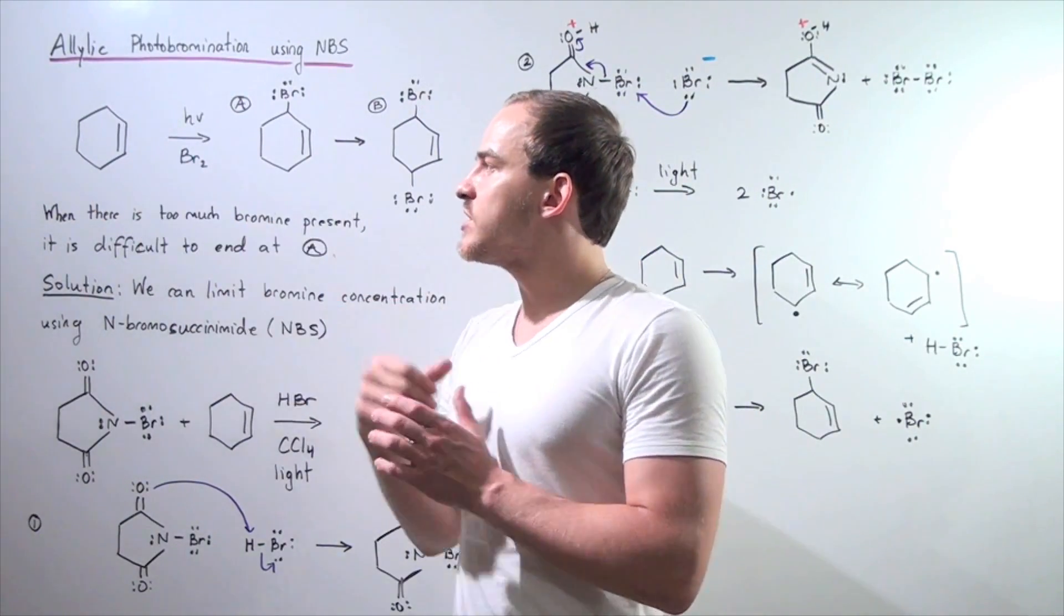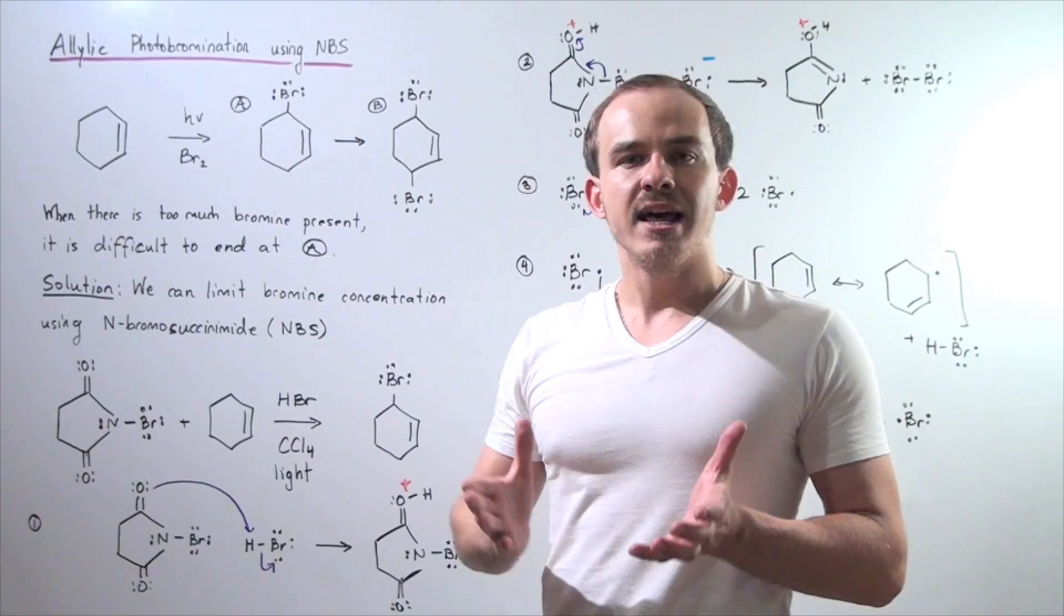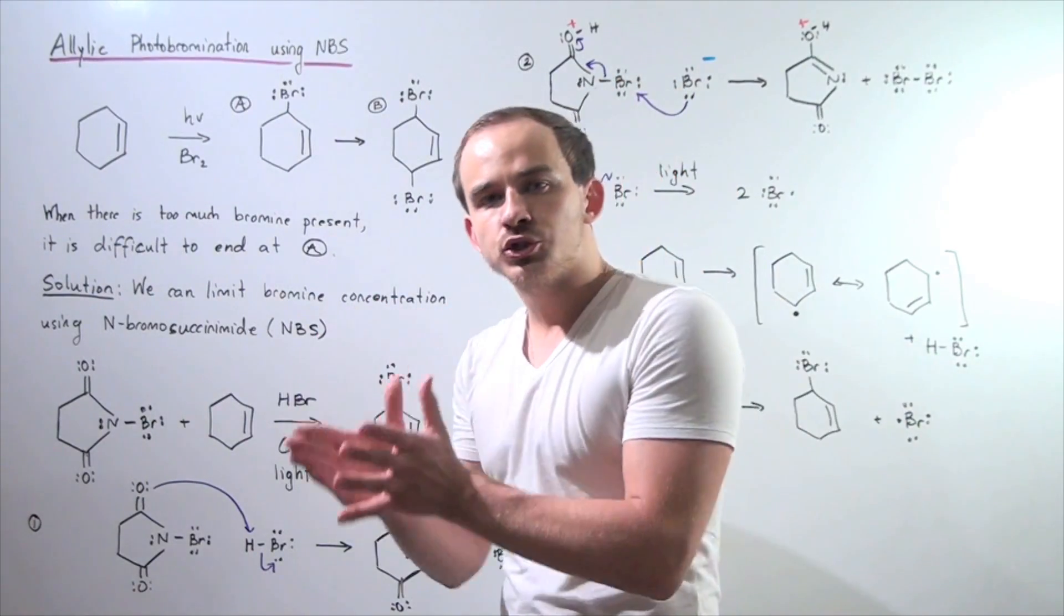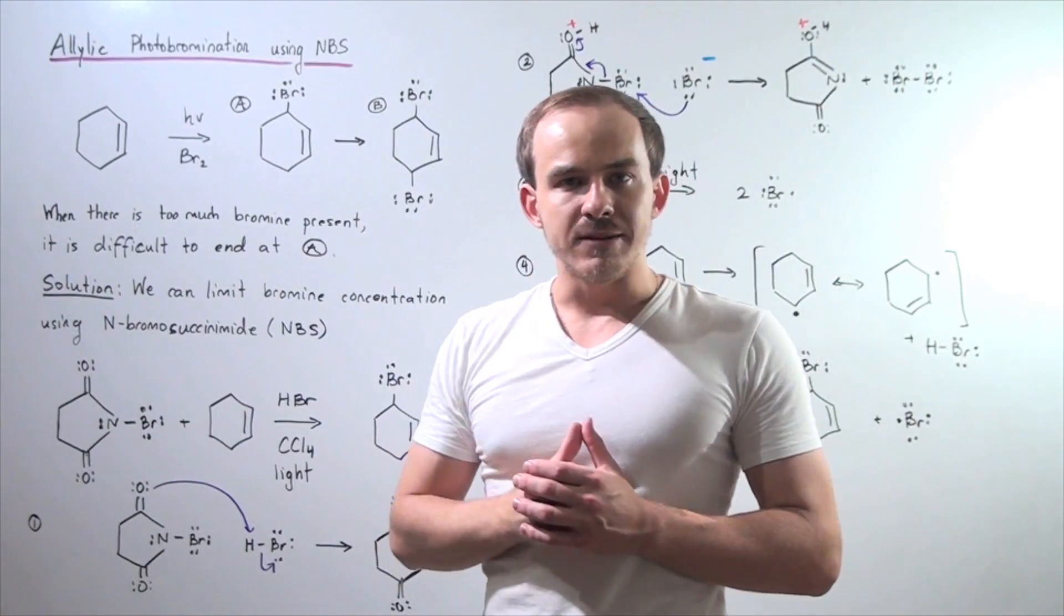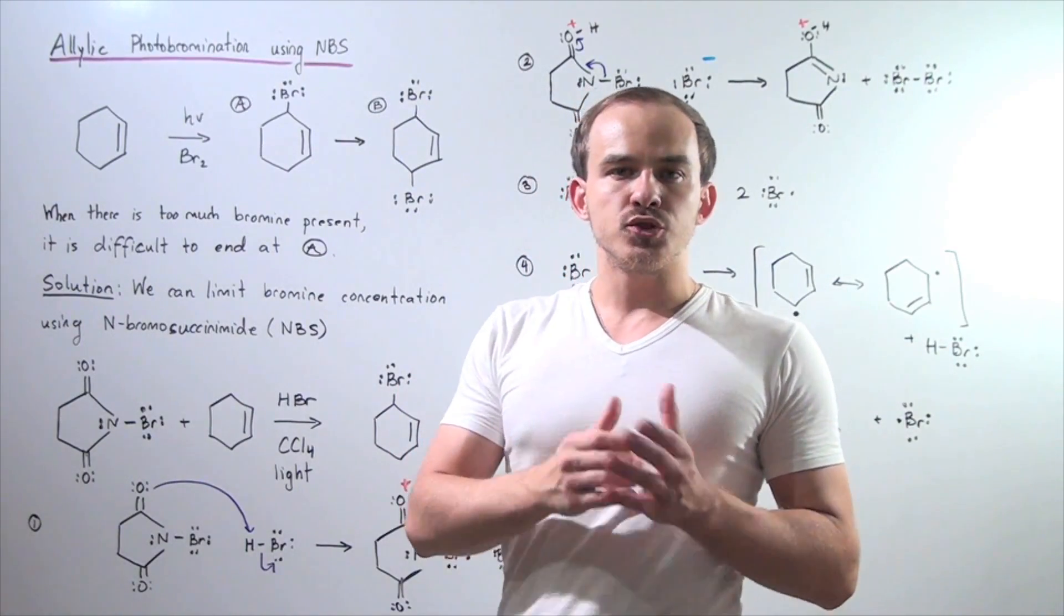Let's say we have the following starting material, cyclohexene, and let's suppose we want to produce the following product A from cyclohexene. What is one way we can produce product A?